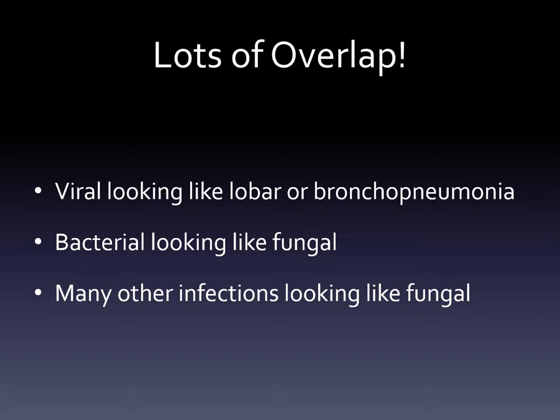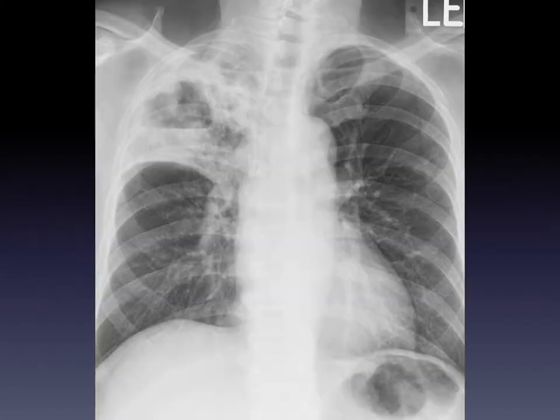I showed you some of the classic appearances of different types of infections, but it turns out there's lots of overlap — different types of infections might look the same, or one type of infection might have different appearances. For chest radiologists who look at these kinds of images every day, there are many different types of appearances. Here in the top part of the right lung, you see lots of whiteness — but do you see that almost circle-like shape? That's actually a cavity where an infection was so severe it destroyed part of the lung, and now there's an open space there.